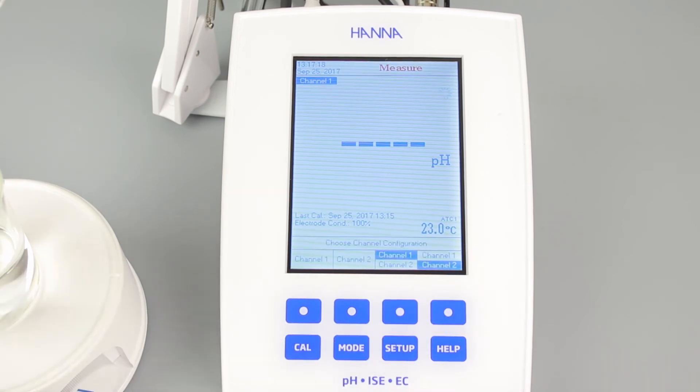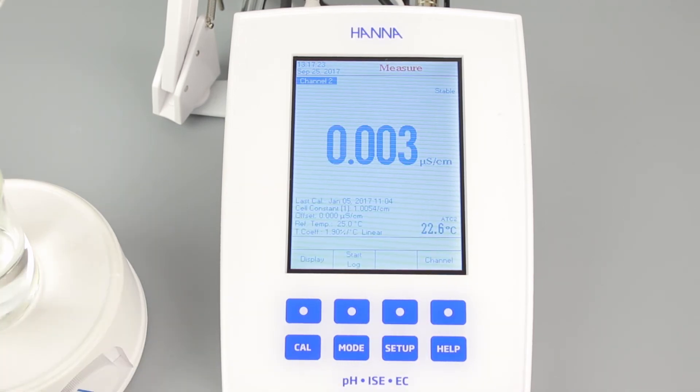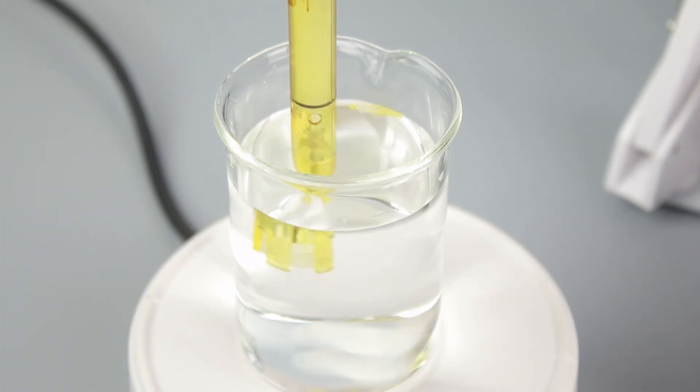To perform a conductivity calibration, access the EC channel by pressing channel, then pressing channel 2. Now, press CAL to enter EC calibration mode. Submerge the EC probe in the standard of your choice. Be sure to rinse with standard before submerging the probe for best results. Once stable, press accept and then escape to save the calibration.